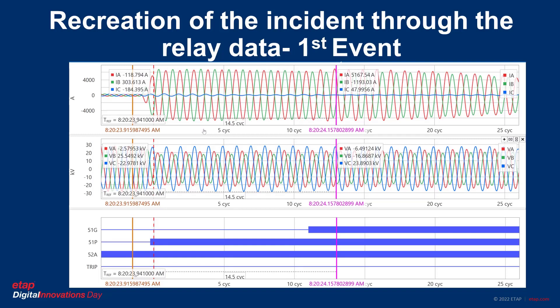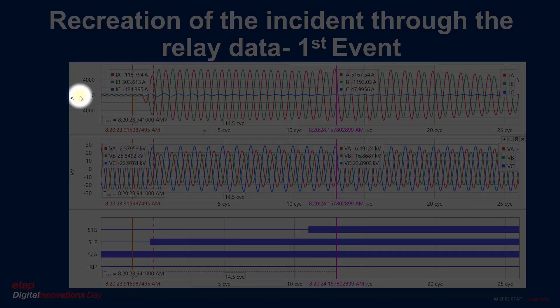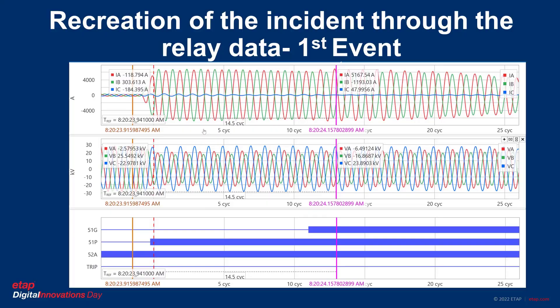This is the first event on the relay. The top graph shows current, the middle chart shows voltage, and the lower shows digital data. I believe many of us are familiar with relay event data. For some that are not, let's do a quick tour of this image and the interface of event data. The top graph shows current. The left Y-axis has the letter A for amps and the X-axis for all three charts shows CYC, which stands for cycle. America and maybe Canada use the cycle as a unit of time. Our Europeans, Africans, and perhaps other places tend to use milliseconds.